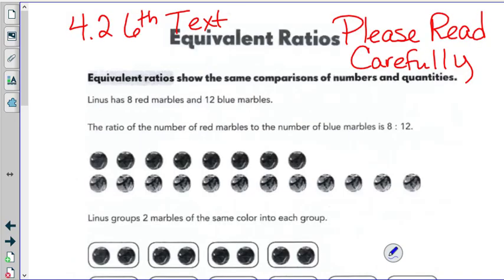So you've completed page 1 and we are on to page 2. As you can see, it is in our textbook 4.2 in the 6th grade pink textbook. Please read this page over carefully. It talks about ratios and how you can group these blue and red marbles into different groups. Equivalent ratios.